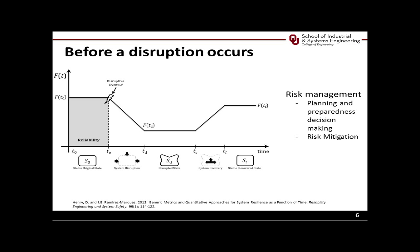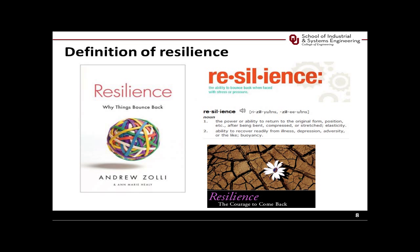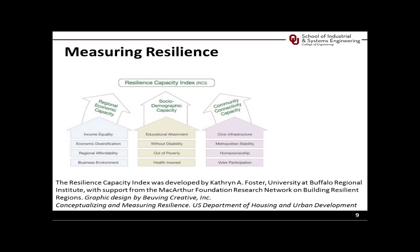Little attention was given to the aftermath of a disruption. How the system is or should be recovering? What are the dynamics involved in the recovery process? This is where resilience is considered. The resilience of a system is its ability to bounce back to its functional state after it had been disrupted. There has been an interest recently in quantifying resilience to improve the accuracy of modeling the recovery process after a disruption.